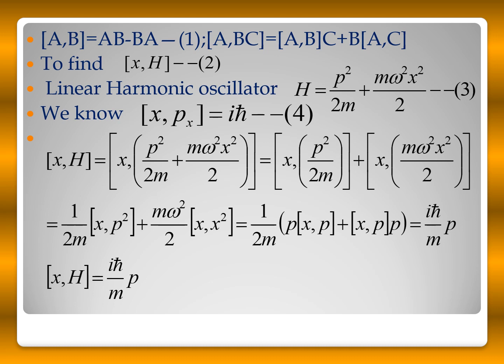The Hamiltonian is generally kinetic energy plus potential energy. This form is taken from the linear harmonic oscillator, and H is expressed in terms of momentum and position. We have already proved that the commutation relation between x and px is iℏ. So now we substitute these values.